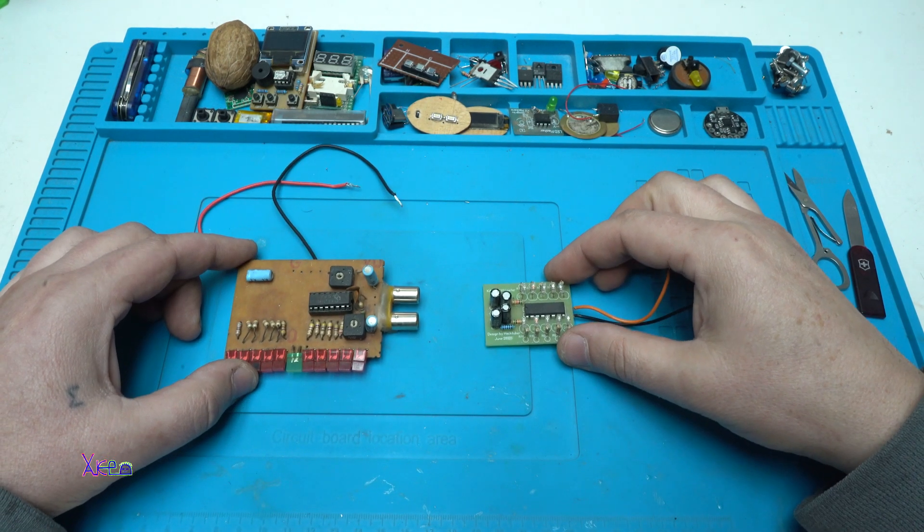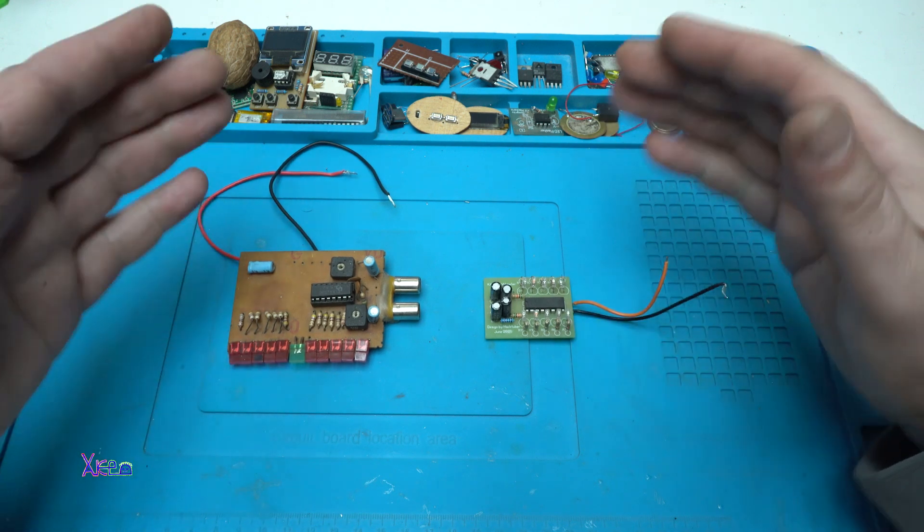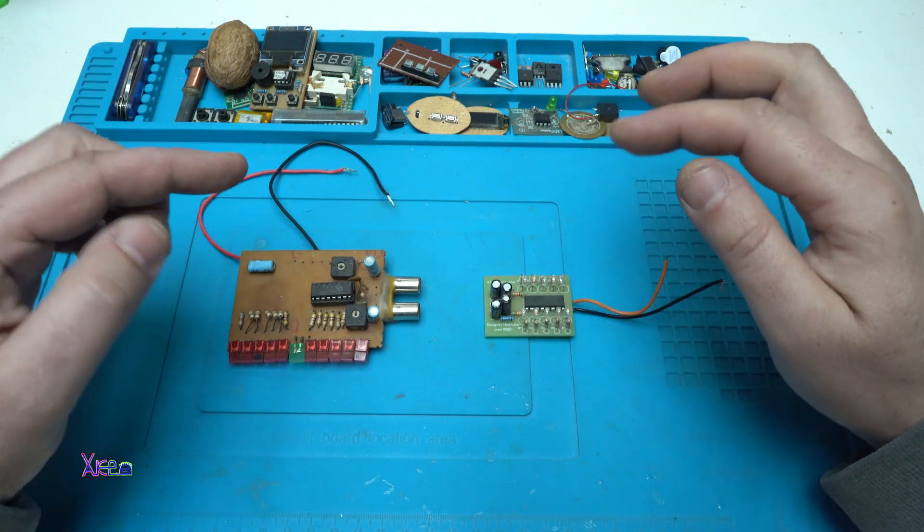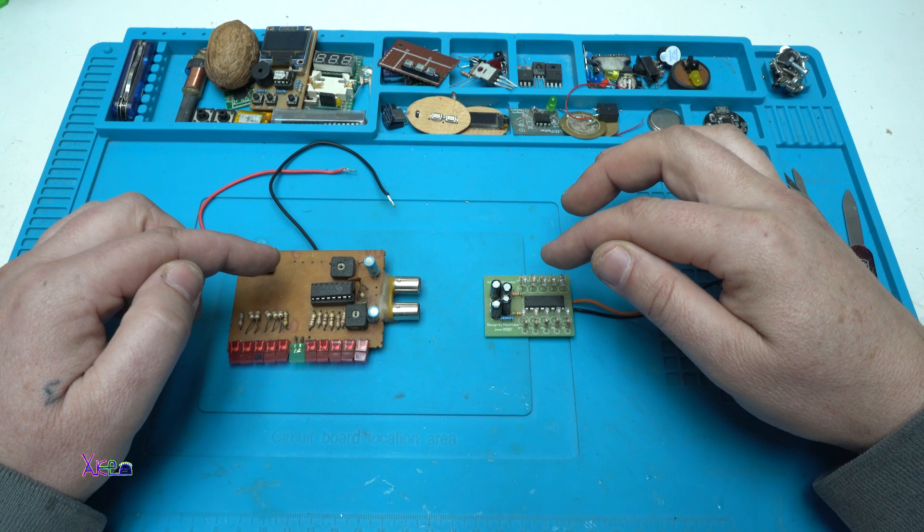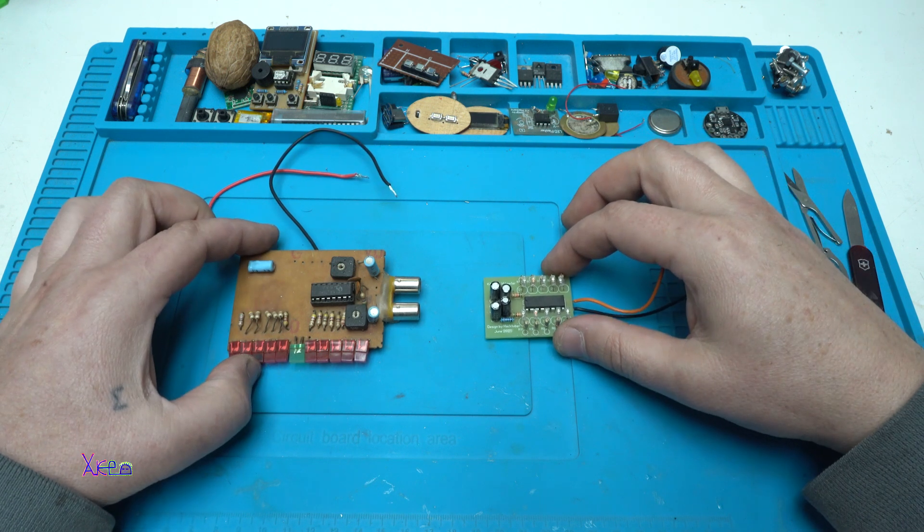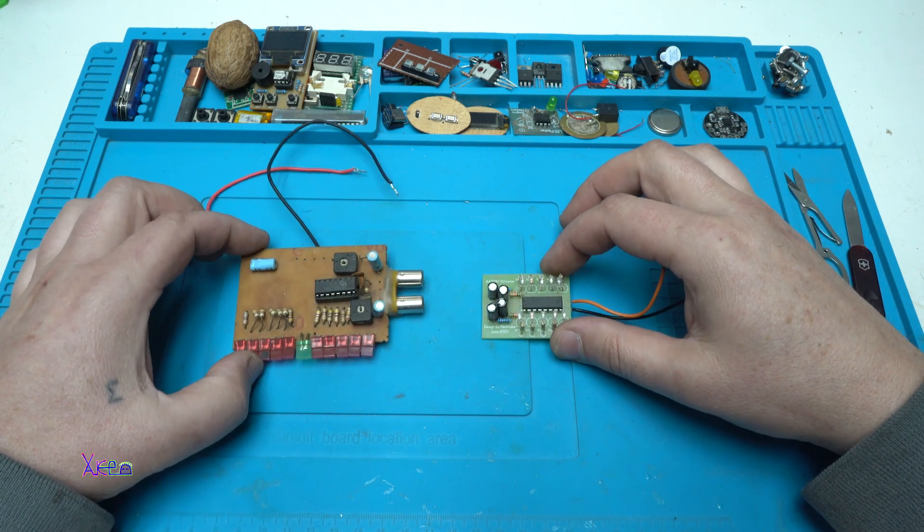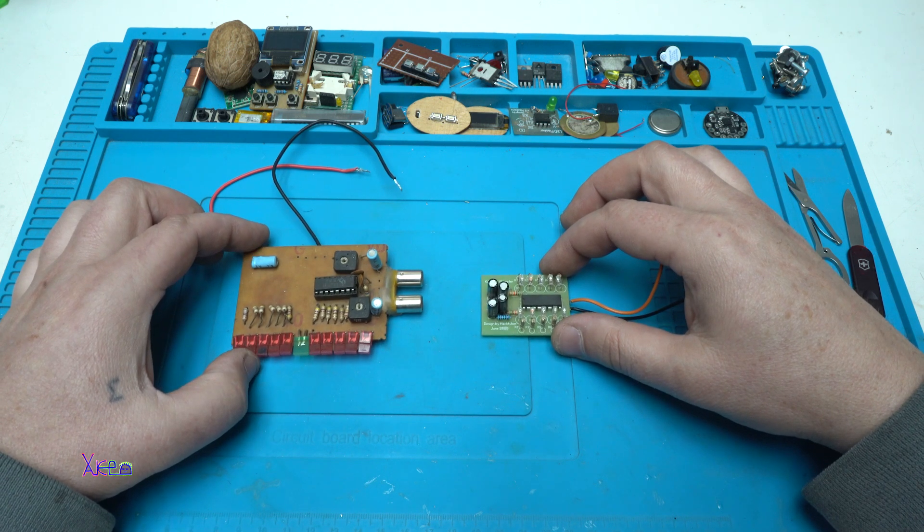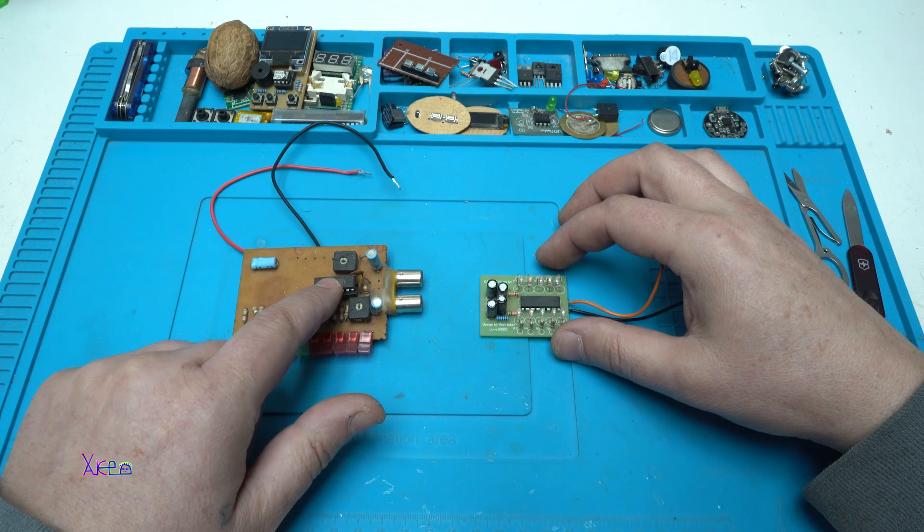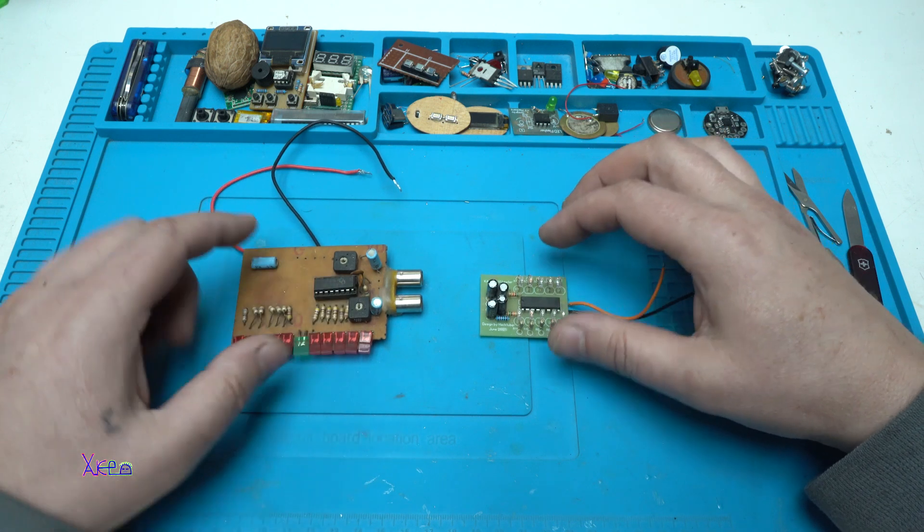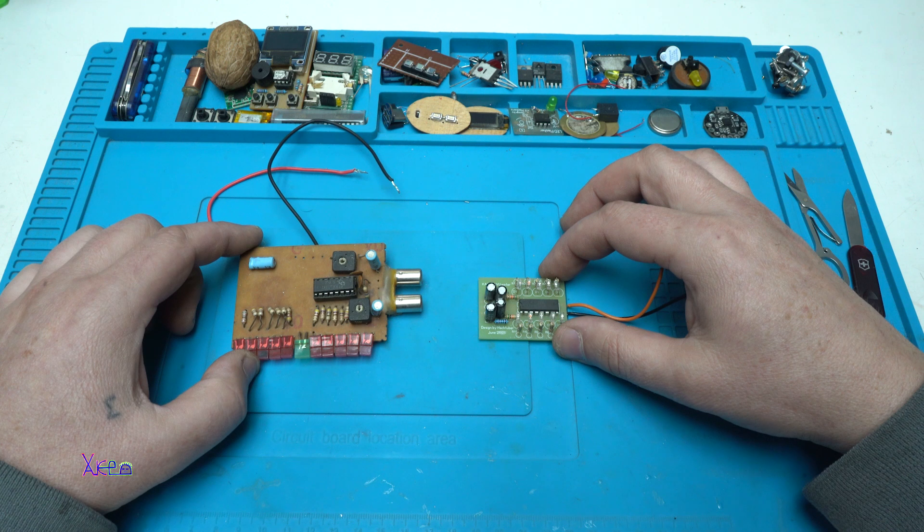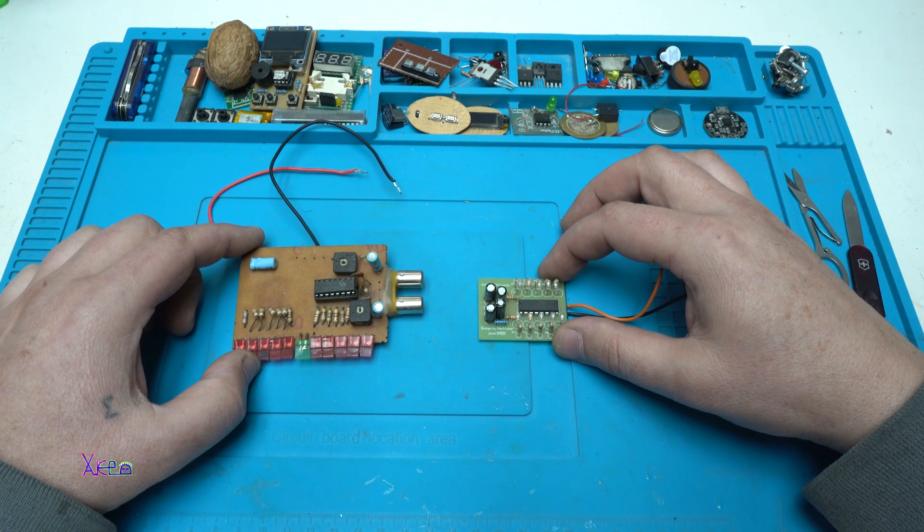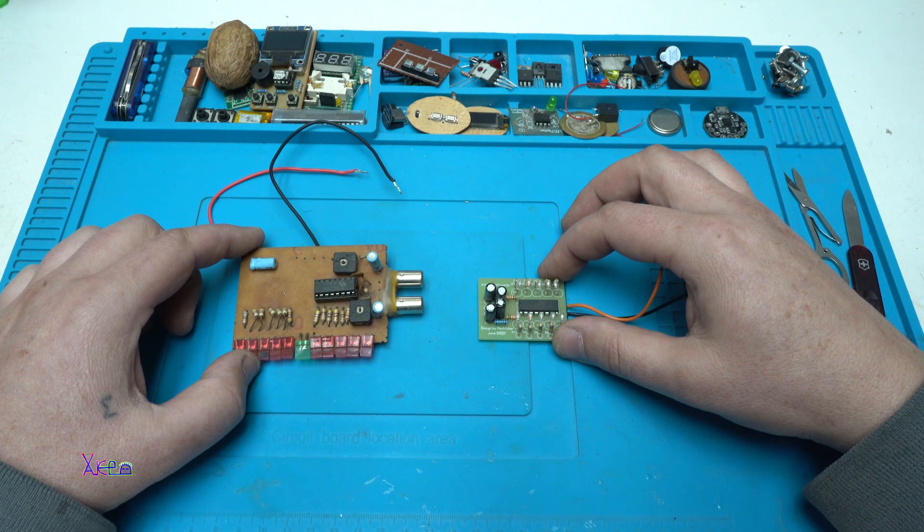Hello Hacktubers and welcome back to my channel. On the table I have two PCB boards, both of them are the same project. It's a voltmeter using this chip, the KA2281 five-dot dual LED level meter driver.